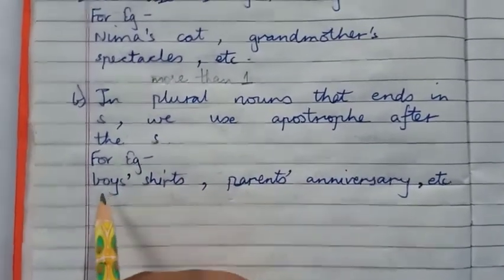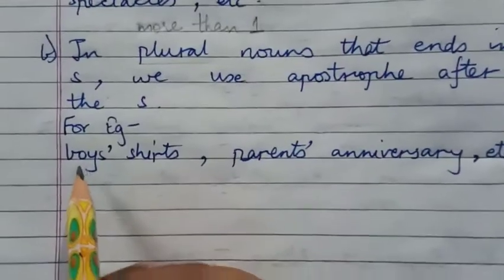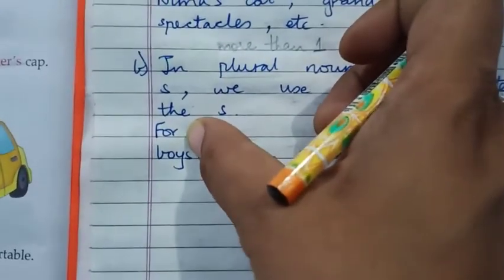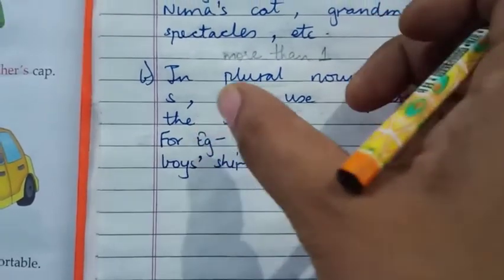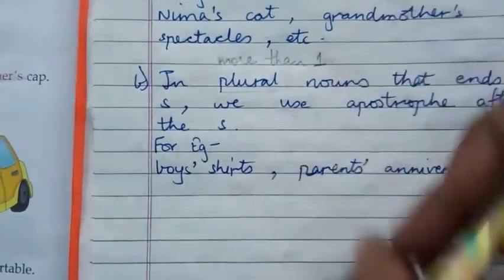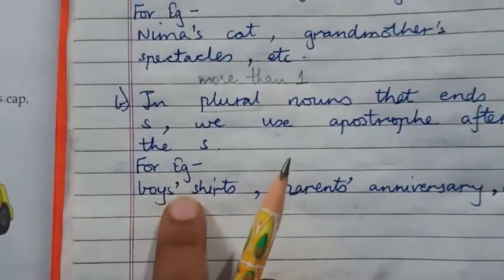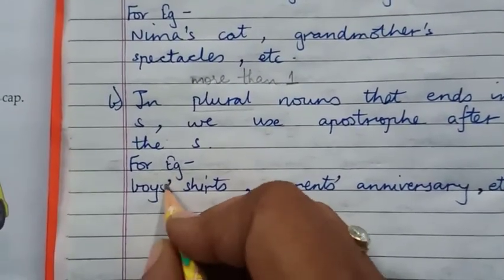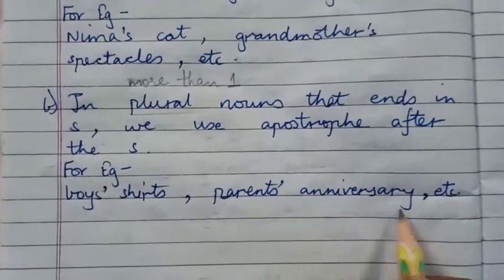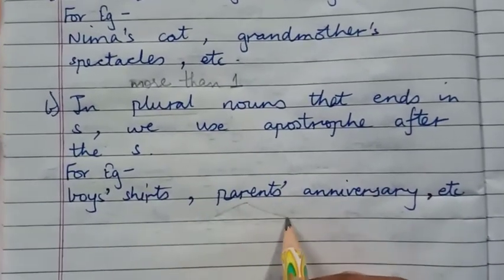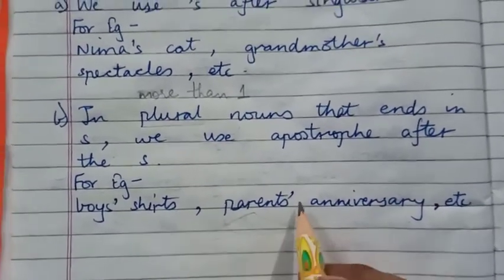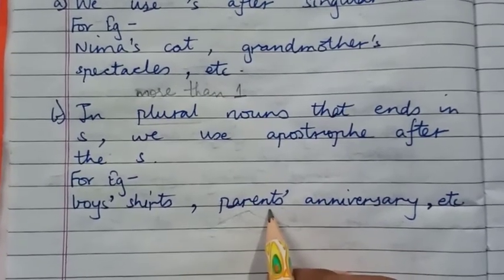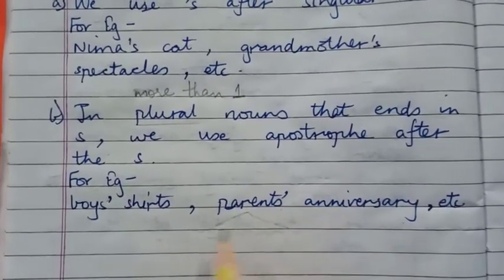So we use apostrophe s after singular nouns, and apostrophe after the s for plurals. For example: boys — there are many boys. Now I'm telling you that especially boys' shirts — so apostrophe comes after the s. Parents' anniversary — mother and father are both parents, so apostrophe comes after the s in 'parents' because we're talking about both parents, mother and father.